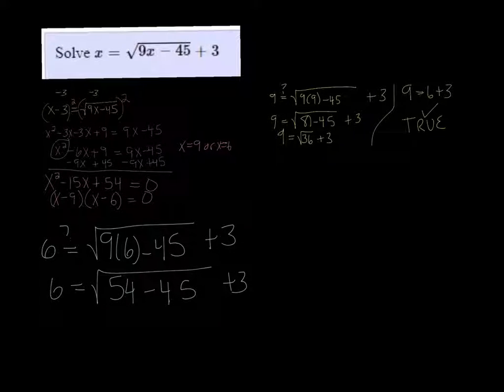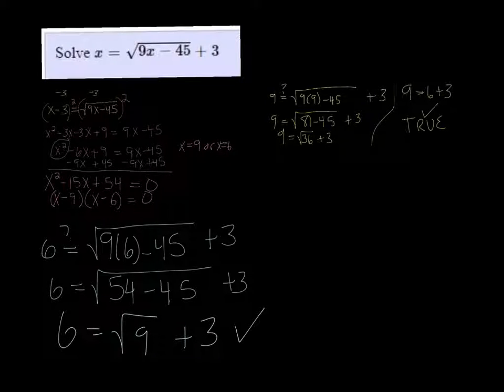Well, 54 minus 45 is 9. And the square root of 9 is 3. 3 plus 3 is 6. So that one also works. So 9 and 6 are indeed the answers.